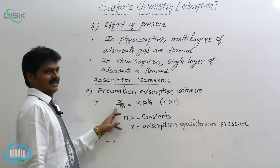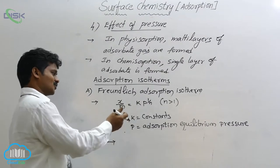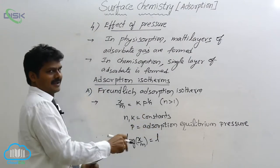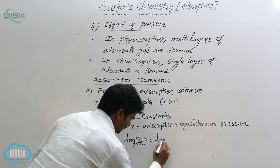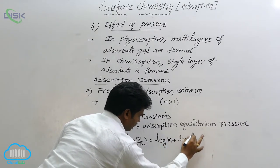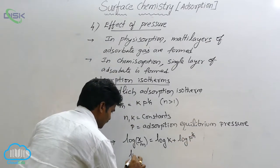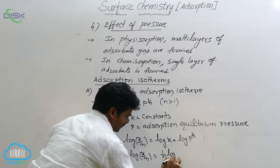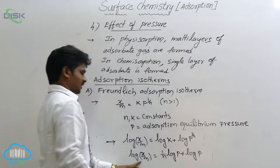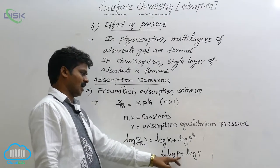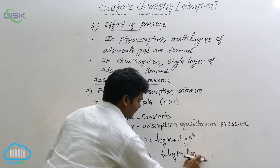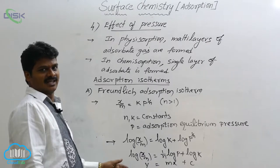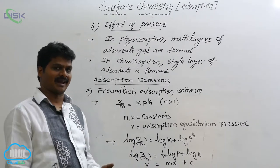Let us write the logarithmic form of the Freundlich adsorption isotherm. Taking logs on both sides: log(x/m) = log k + log(p^(1/n)), which gives log(x/m) = (1/n)log p + log k. This resembles y = mx + c, giving a straight line not passing through the origin.